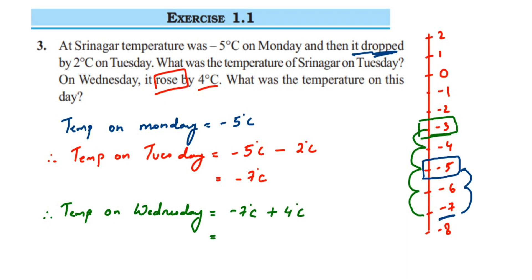When you have different signs, you subtract the numbers and the sign belongs to the greater number. 7 minus 4 equals 3, so 3 degrees Celsius. The sign: which number is greater — 7 or 4? It's 7, and 7's sign is minus, so the final answer is minus 3 degrees Celsius.